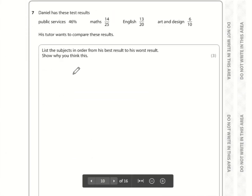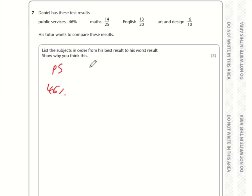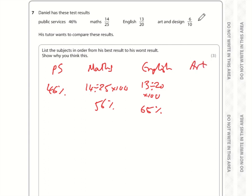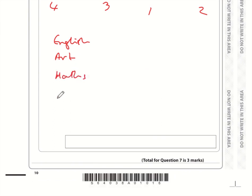For this question, we've got public services, which is 46%. The best thing to do is turn all of these into percentages. To turn a fraction into percentage, it's top divided by bottom times by 100. 14 divided by 25 multiplied by 100 comes to 56%. English: 13 divided by 20 times by 100 is 65%. Art and design: 6 out of 10 is 60%. We want the best to the worst. So English, then art, maths and public services.